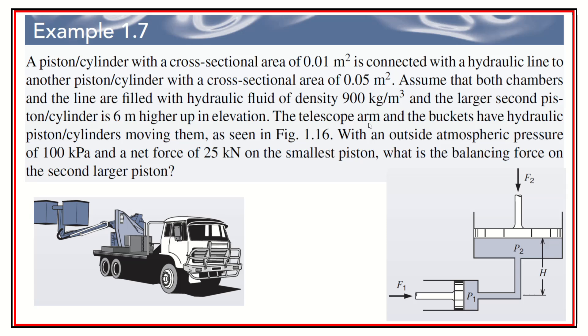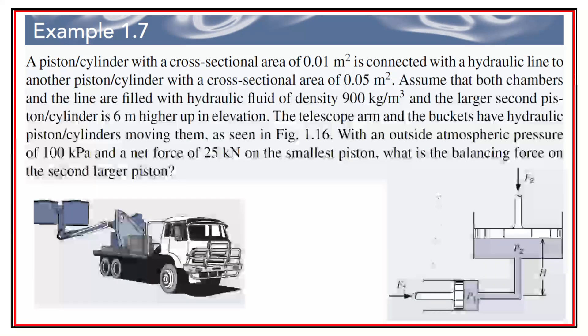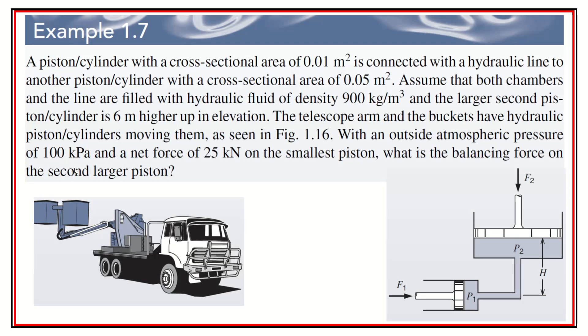The telescope arm, this little guy right here, and the buckets have a hydraulic moving them, as seen in this little picture over here. With an outside atmospheric pressure of 100 kilopascals, which is just a little bit below what standard atmospheric pressure is, and a net force of 25 kilonewtons on the smallest piston, so down here, what is the balancing force on the second larger piston? It's really kind of asking what can it lift if this is right here. So we're putting this as the input, and this is going to be the output.